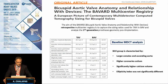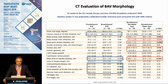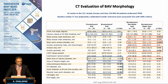Bicuspid valves have higher coronary ostia, significantly higher calcium volume, and interestingly, no significant difference was found in the ellipticity index. Looking at the different anatomical and morphological differences between the various types, when we compare the functional valve and the tricuspid valve, bicuspid valves are characterized by larger anatomies above the annulus and more calcium volume.